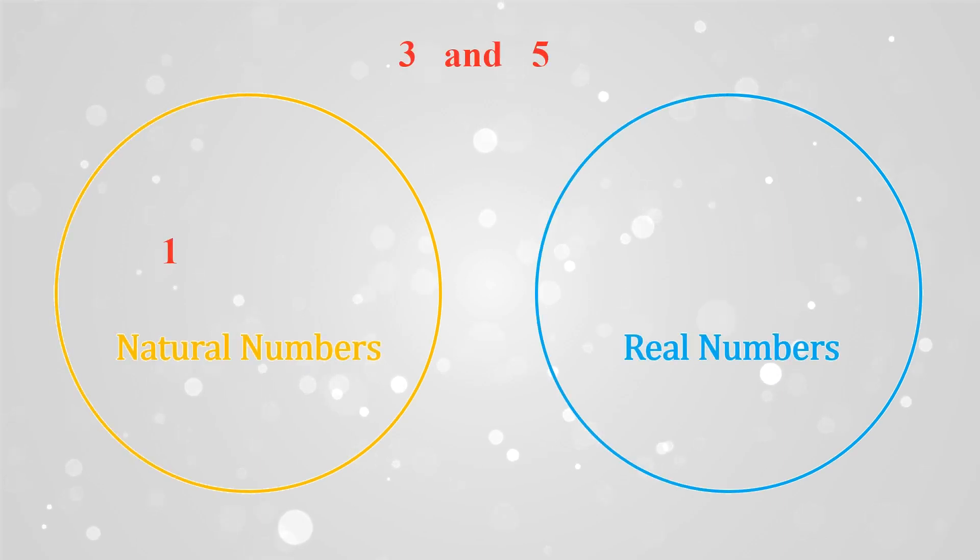In natural numbers, there is just one number between 3 and 5, and its inverse is also one. But in real numbers, there are infinite numbers, and its inverse is complicated or out of context with the rules of natural numbers.